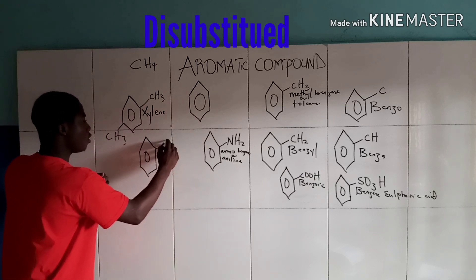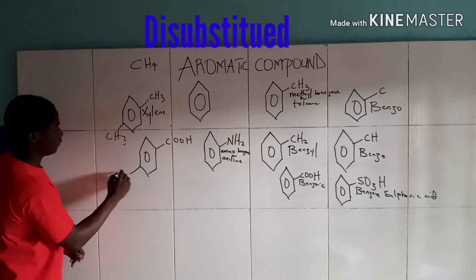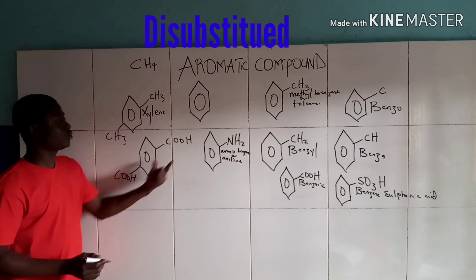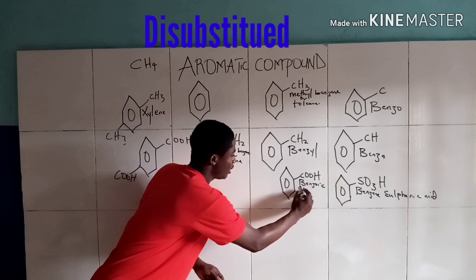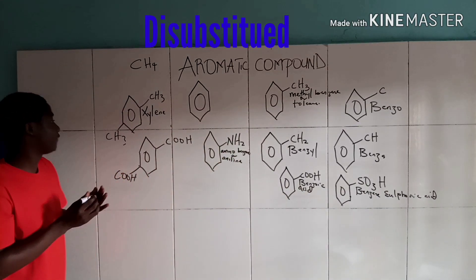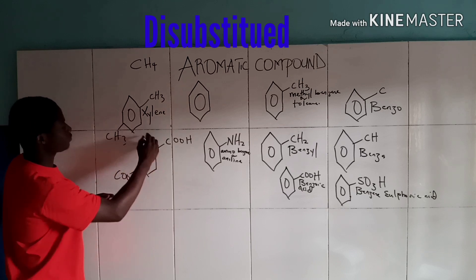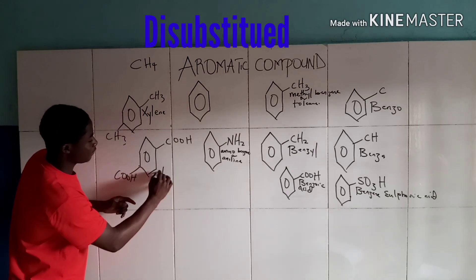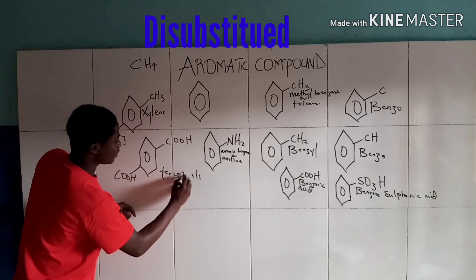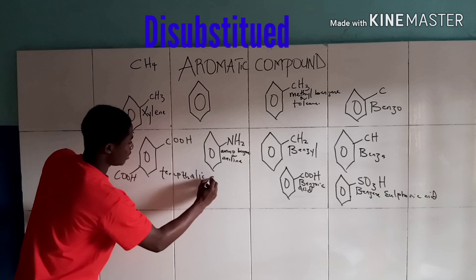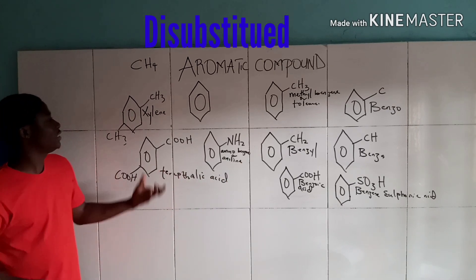Another disubstituted benzene derivative is benzene attached to two COOH groups. Normally one COOH on benzene gives benzoic acid, but with two COOH groups it is called terephthalic acid. So all of these are examples of disubstituted benzene derivatives.